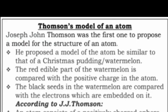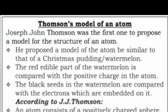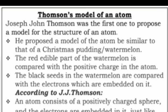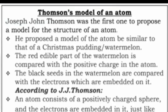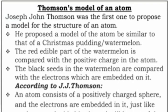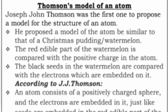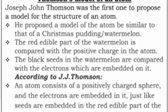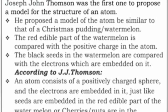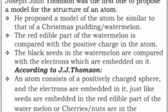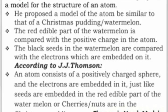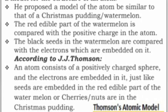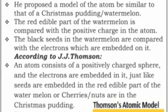Joseph John Thomson was the first one to propose a model of the structure of an atom. He proposed a model of the atom be similar to that of a Christmas pudding or watermelon. The red edible part of the watermelon is compared with the positive charge in the atom. The black seeds in the watermelon are compared with the electrons which are embedded in it.